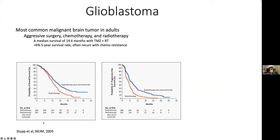Glioblastoma — you may be familiar with this type of brain cancer. It's the most malignant brain tumor in adults. It is always fatal. It's treated with aggressive surgery, chemotherapy, and radiotherapy. And even despite this aggressive treatment, by the five-year mark only 5% of people survive.